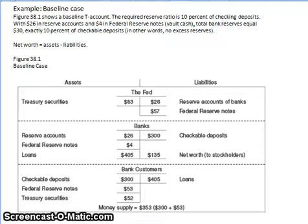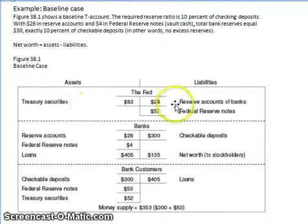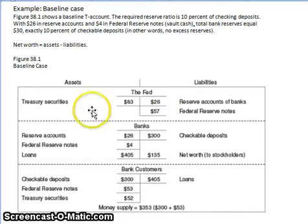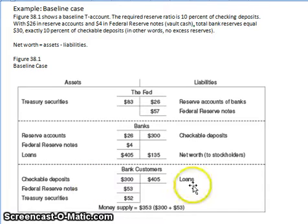The first case here is that we're using a T-sheet and a set of T-accounts to examine three tiers of the U.S. financial system. The top tier is at the U.S. Federal Reserve level. The second tier is the banking level — the banks that you and I would conduct our business in. And then the third tier would be us, the banking customers.